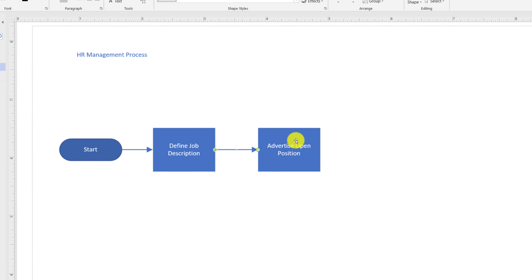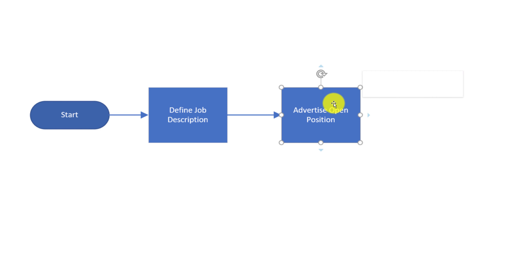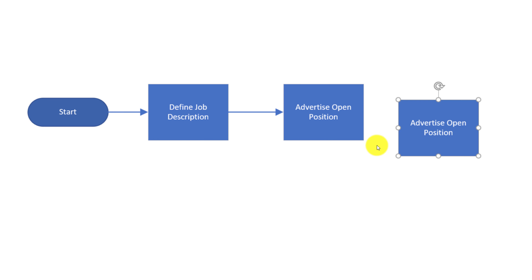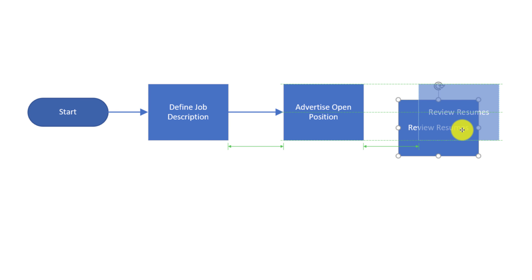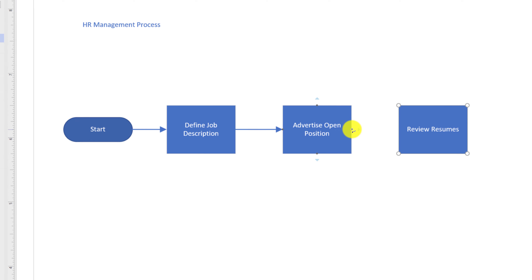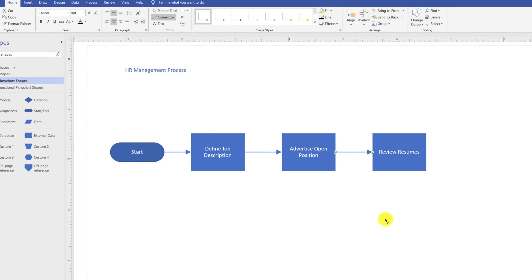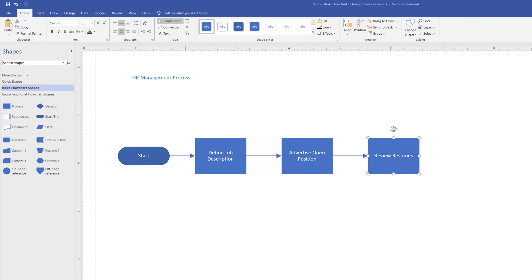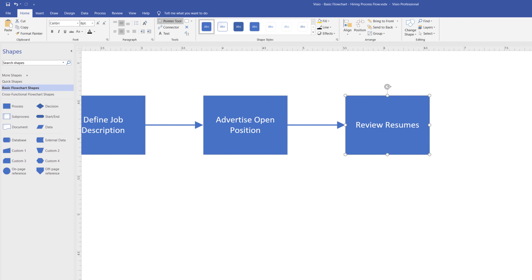The second major way to add shapes is to select an existing shape, copy it, and paste it. You can update the text on the copied shape by double-clicking. Then drag the shape to position it along the grid lines with existing shapes. Switch to the Connector tool to draw a line from the existing shape to the new one.